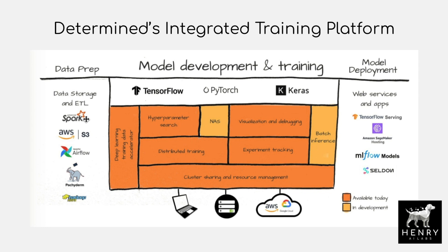First you have your data preparation — where your data lives, like your S3 buckets. On the bottom are your runtimes: you could have AWS EC2 or spot instances, GCP Google Cloud Compute, your own local cluster running on Kubernetes, or your own local data science workstation. All of these different runtimes can be managed with the Determined AI platform.